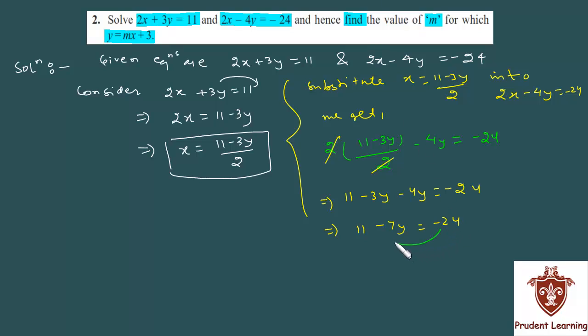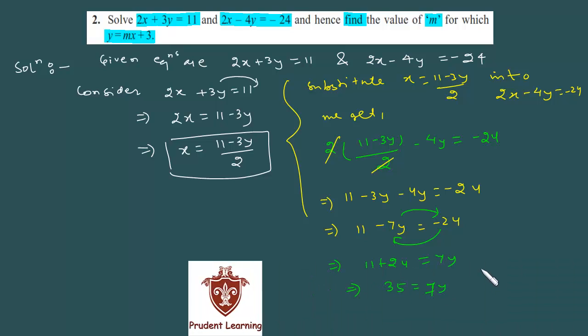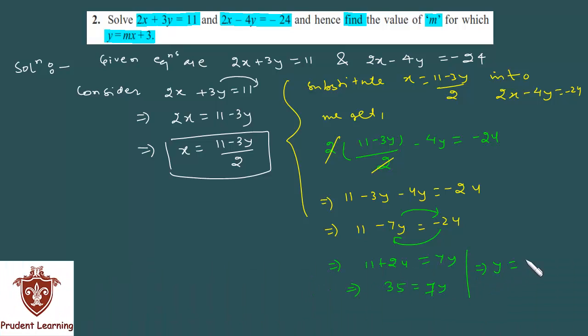Now side change, this minus 24 is equal to LHS and minus 7y is equal to RHS. So this will get you as 11 plus 24 is equal to 7y, and 11 plus 24 is 35 is equal to 7y, which gives us y is equal to 35 over 7 which is equal to 5.